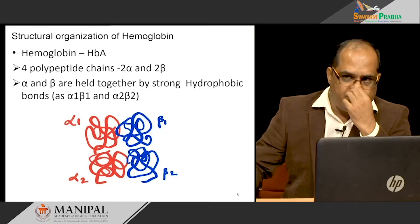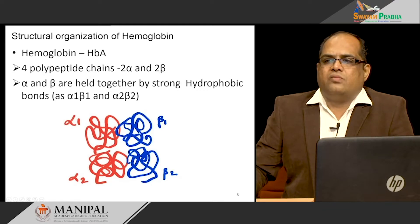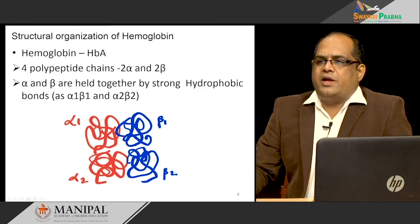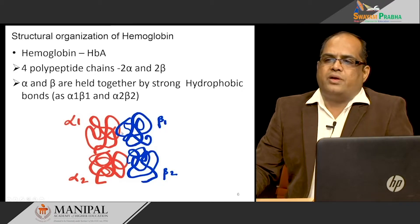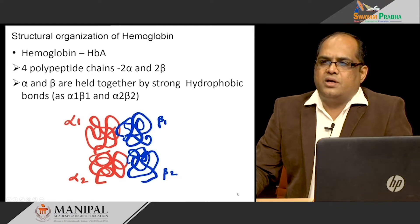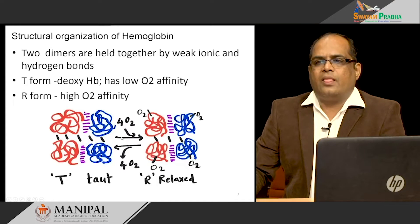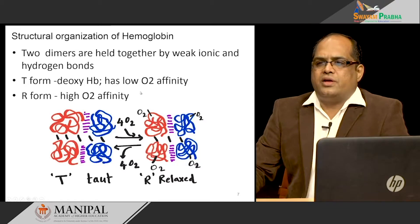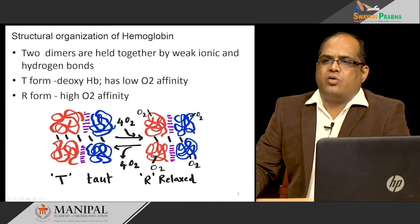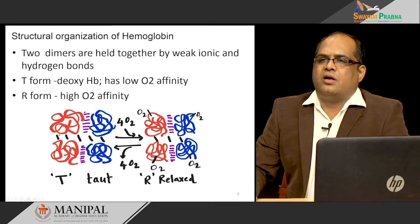Hemoglobin A is made up of four polypeptide chains: alpha-1, alpha-2, beta-1, and beta-2. Two alpha and two beta chains are held together by strong hydrophobic bonds. Alpha-1 and beta-1 work together as a unit, and alpha-2 and beta-2 work as another unit, because of the strong hydrophobic bonds between these alpha and beta chains. The two dimers are held together by weak ionic and hydrogen bonds — so within the dimer the bonds are strong hydrophobic bonds, whereas between the dimers the linkages are weak ionic or hydrogen bonds.